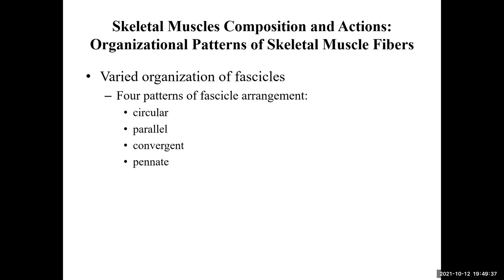When dealing with skeletal muscle fibers, you might notice certain patterns. Skeletal muscle is striated, and these striations create what we call fascicles — groupings or bundles of muscle fibers. When we look at them grossly, we'll see they have a specific organizational pattern. There are four patterns to discuss: circular, parallel, convergent, and pennate.